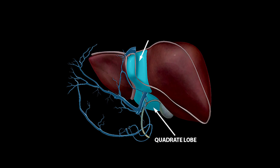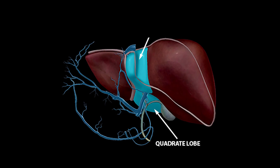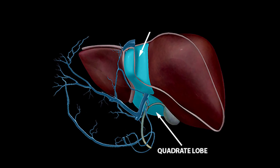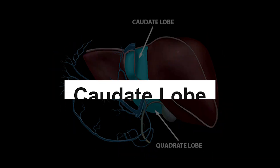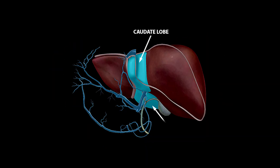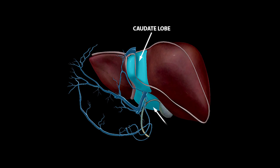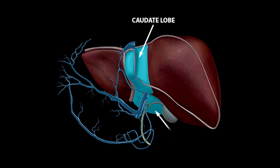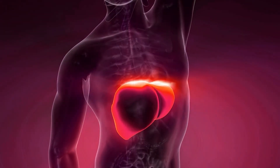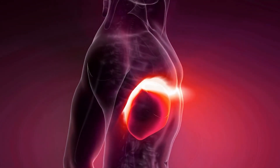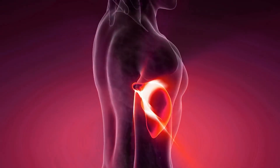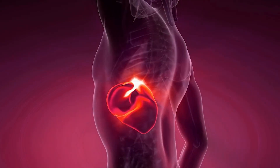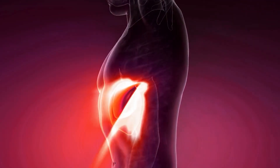Quadrate lobe. This small, square-shaped lobe is found on the undersurface of the liver, adjacent to the gallbladder. It is sometimes considered a separate lobe. Caudate lobe. The caudate lobe is a small, tail-like extension of the liver located on the posterior surface of the liver, near the vena cava. These lobes and segments give the liver its complex and irregular shape. While the overall shape of the liver is often likened to a triangle, it is more accurately described as a multi-lobed, wedge-like organ with these distinct parts.